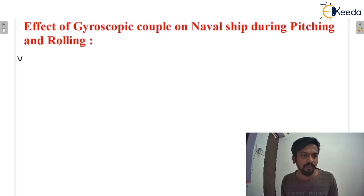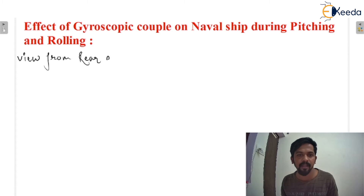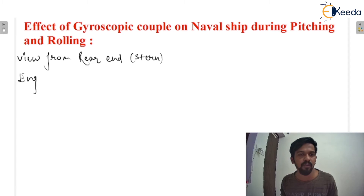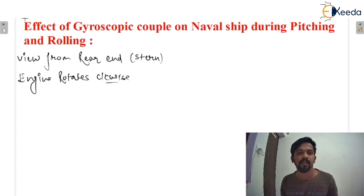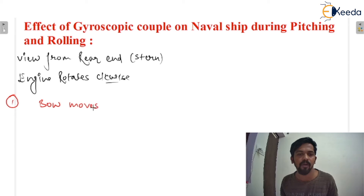The given condition: we are looking at the ship from the rear end, which is considered as the stern. The second condition: engine rotates clockwise. First, I am going to consider bow moves up — or you can say, the stern moves down.